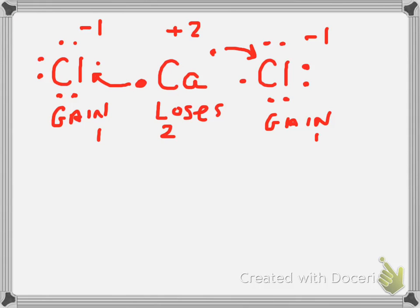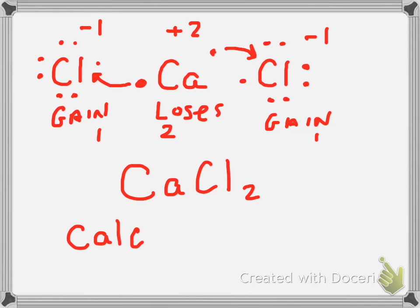Calcium's charge as a result is plus two. So the final formula, if you get rid of all the diagramming, is CaCl₂. This compound would be called calcium chloride. I'll show you a shortcut for determining the formula from the name in the next lecture.